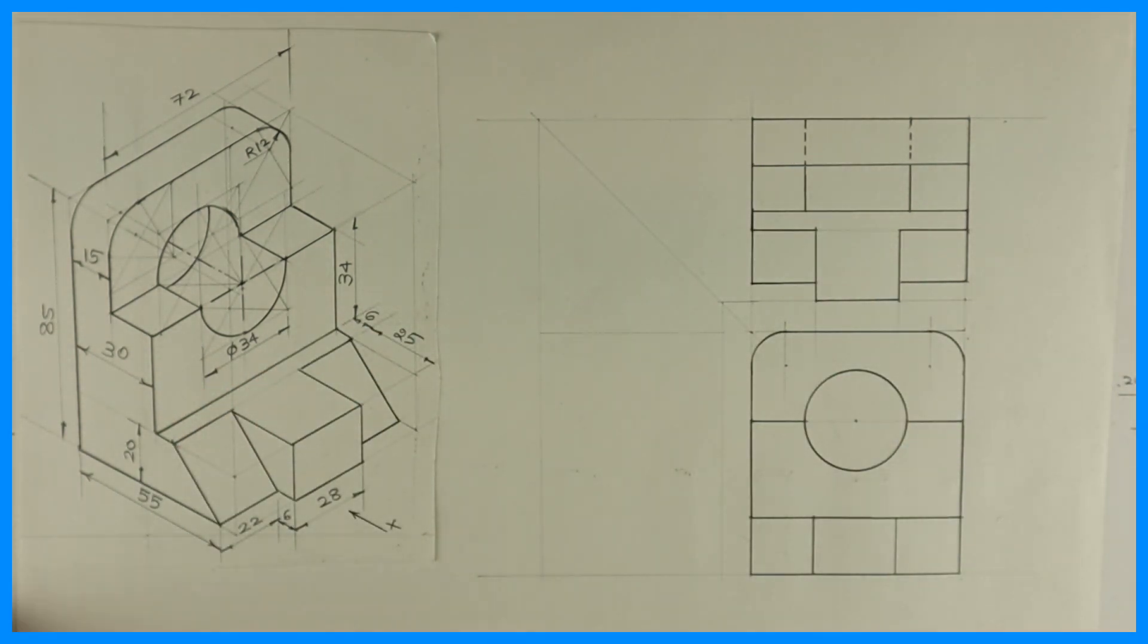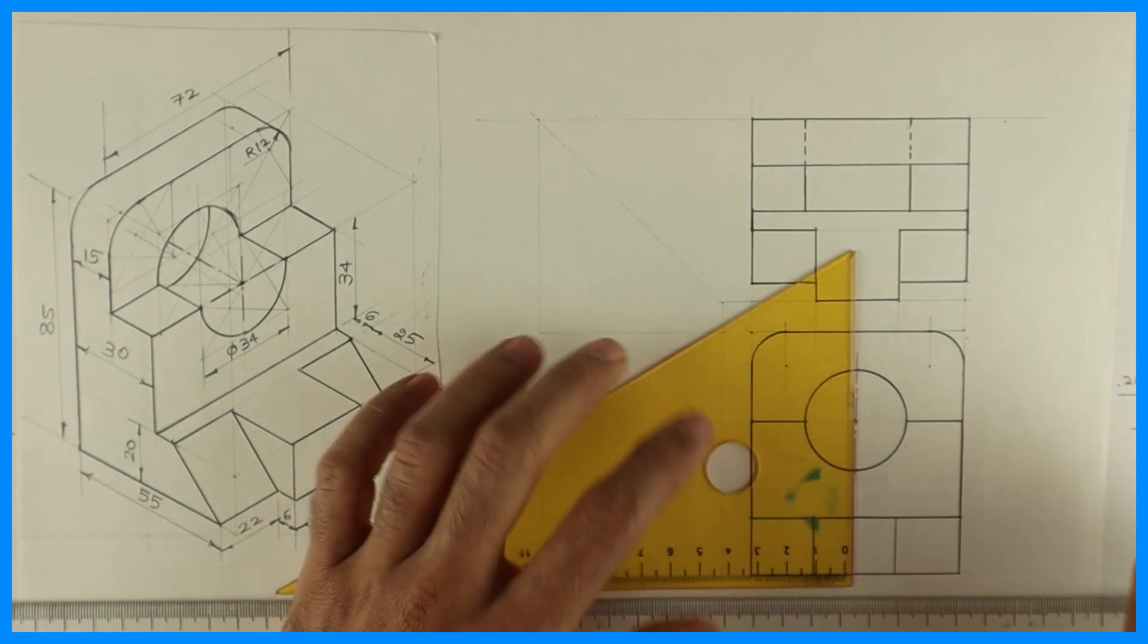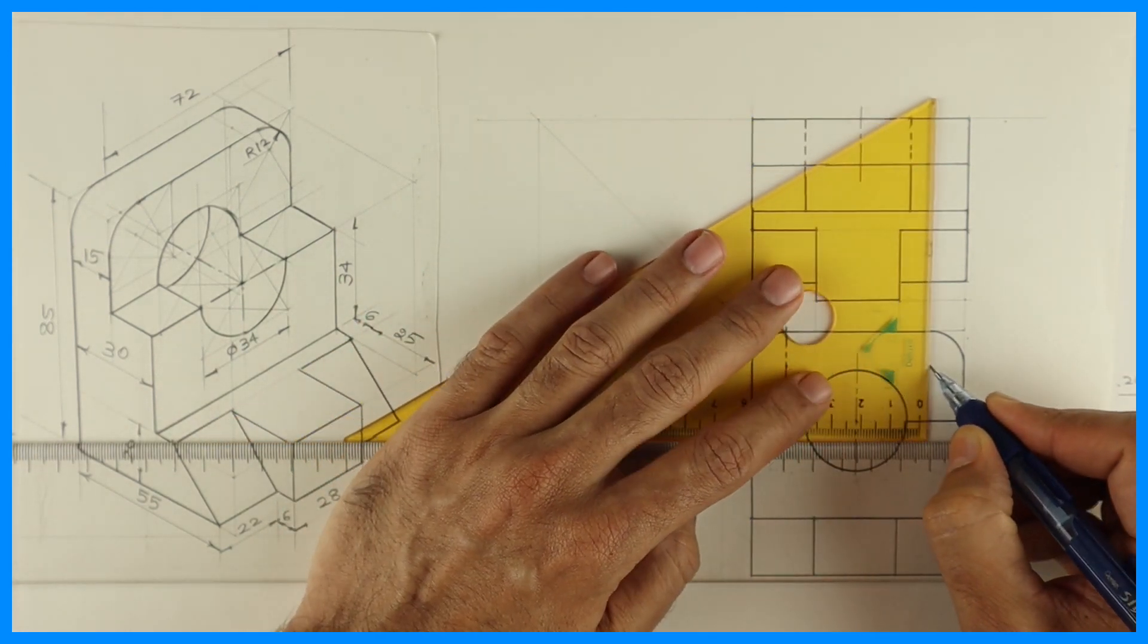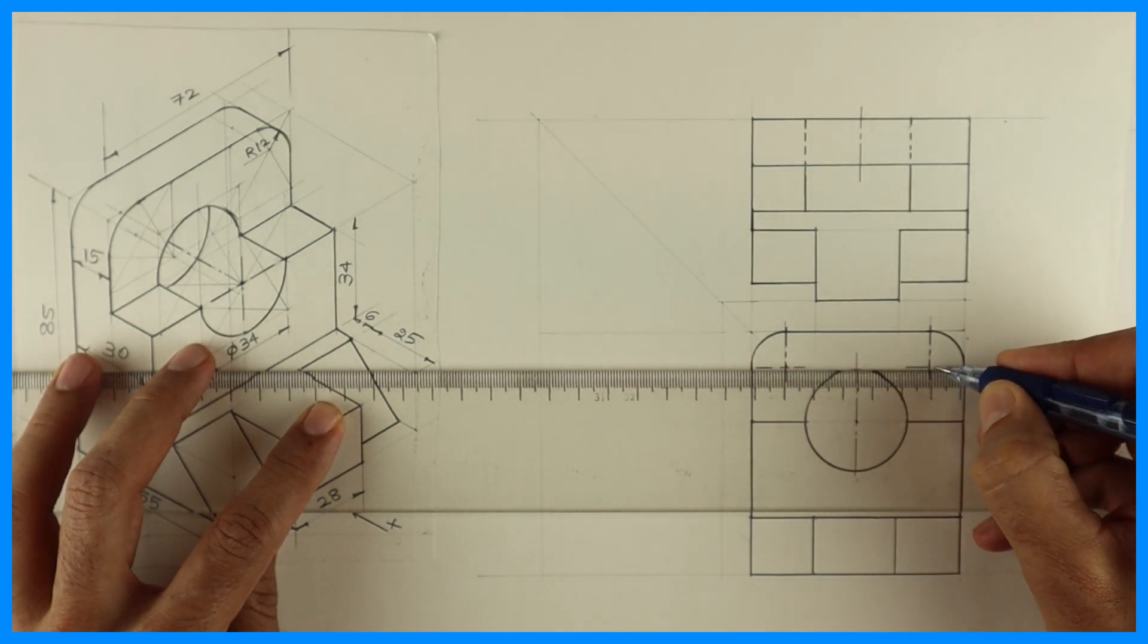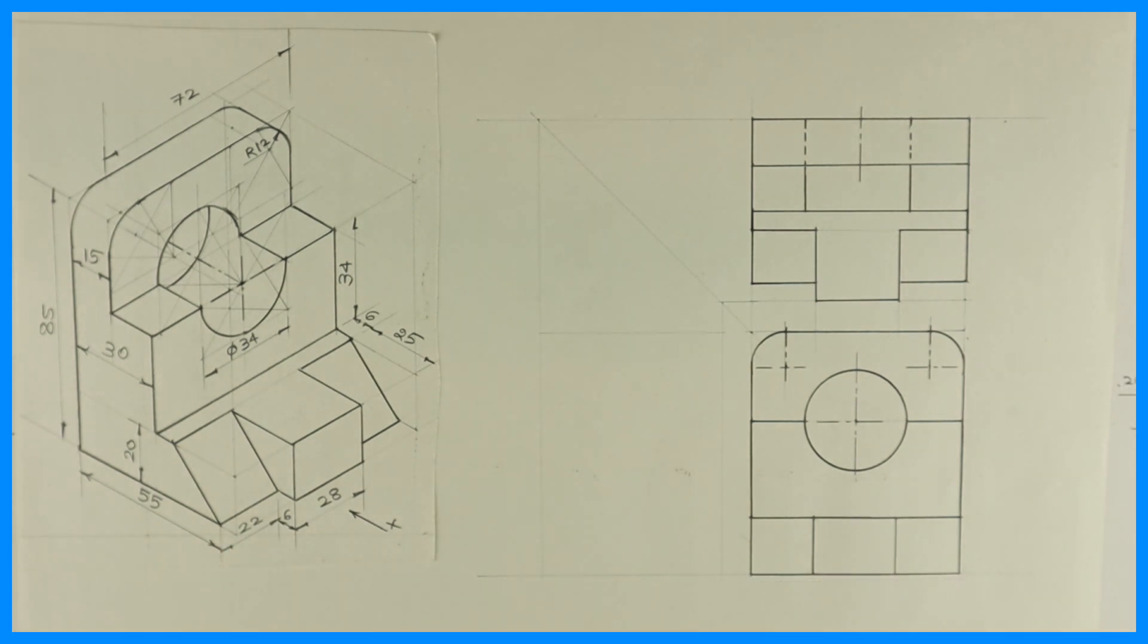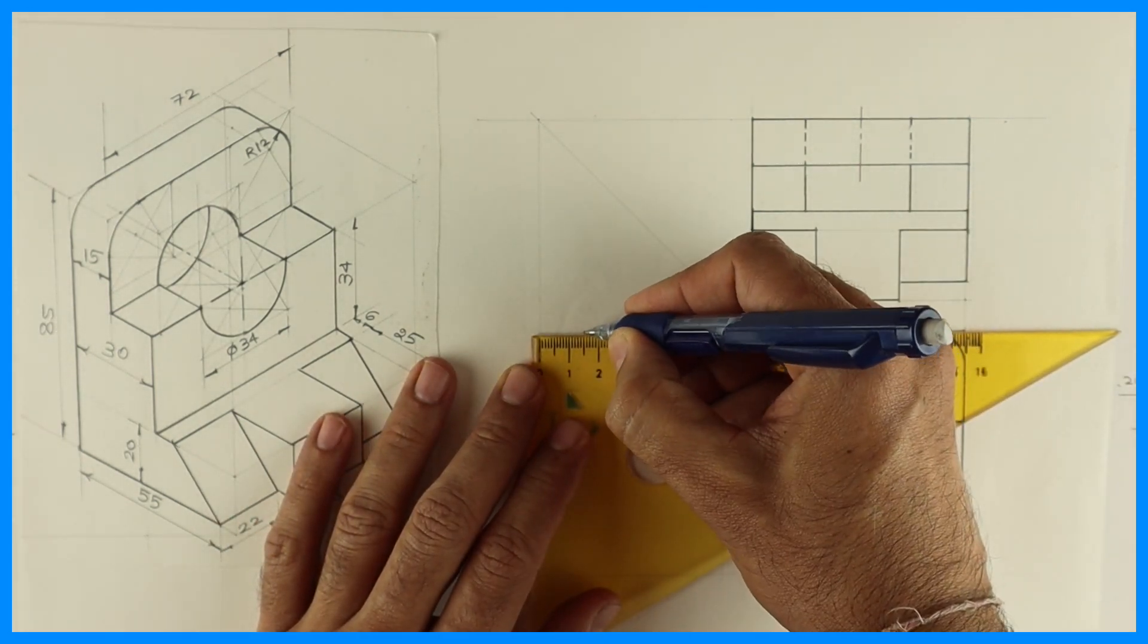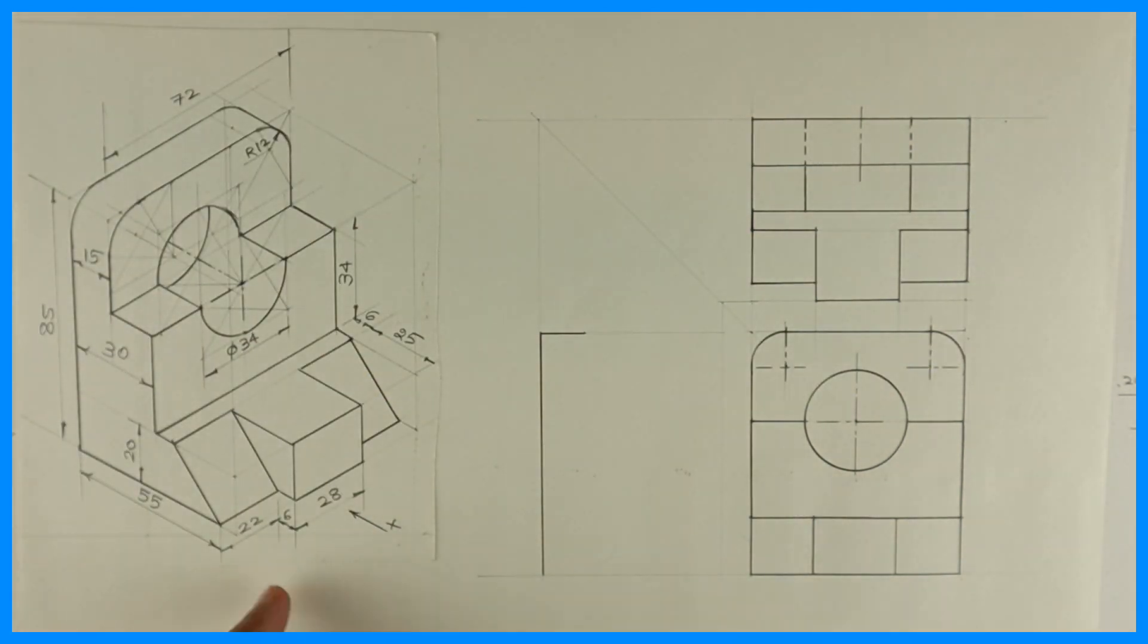Now we'll try for side view. Now we are drawing left hand side view, which will be on left side. We can draw axis line also. Now we'll draw side view. See this part: 15, 30, 55, this 6, so that we can project. So I'm marking 15. Then you go down by straight 85, and then this is 55.